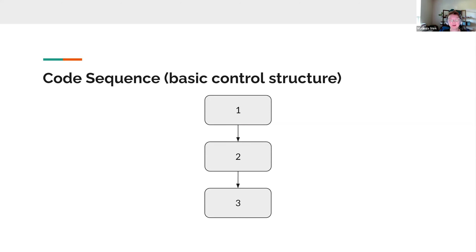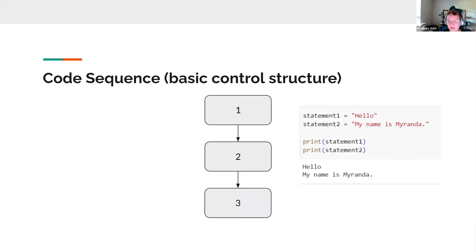Let's look at some flow diagrams. In our typical code sequence, each block is a line of code — it just runs line by line from top to bottom. For example: statement1 = 'hello', statement2 = 'my name is Miranda', print statement1, print statement2. It's very stepwise. But now we're going to talk about how to change this flowchart — changing which lines of code run and when.